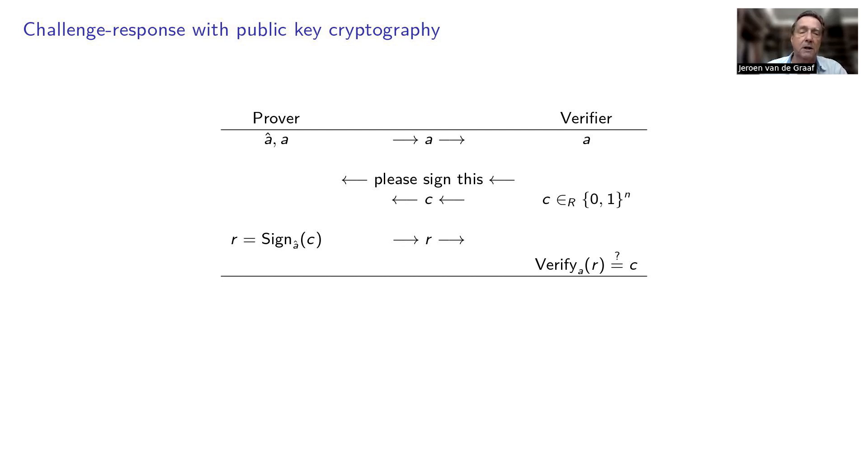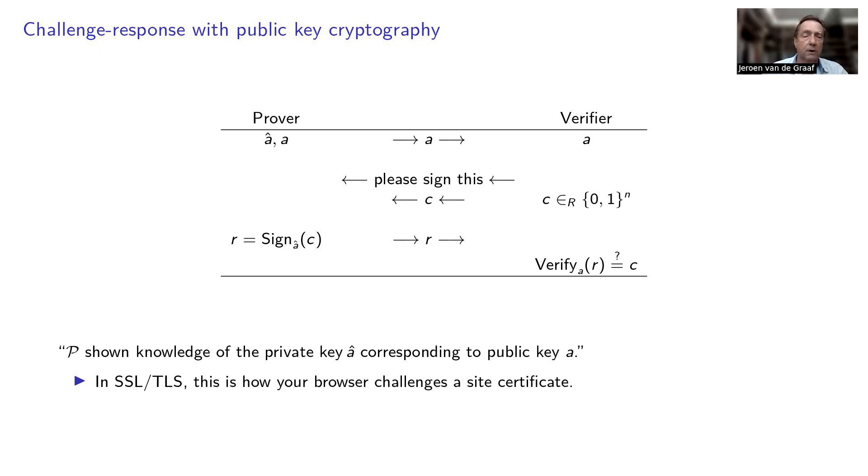request is 'please sign this.' So the prover signs the challenge, sends it to the verifier, and the verifier, using the public key of the prover, is going to check whether the digital signature indeed is correct, and if so, accepts the authentication. And you may find it interesting to know that in